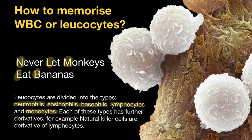As for the abundance of these leukocytes, the order of the letters in this sentence is not random — it goes in descending order. The most abundant are neutrophils, making up 60%. Next, L stands for lymphocytes, making up 30%.